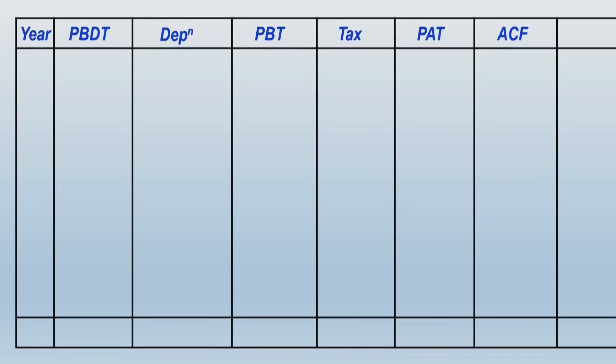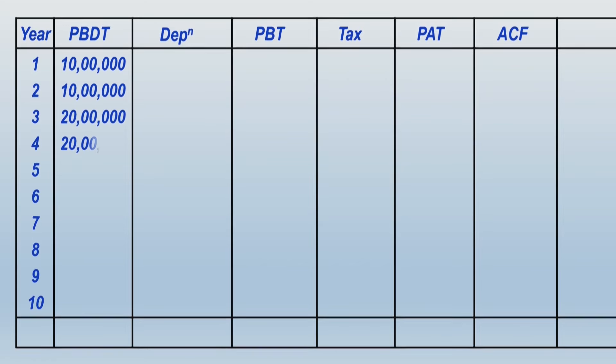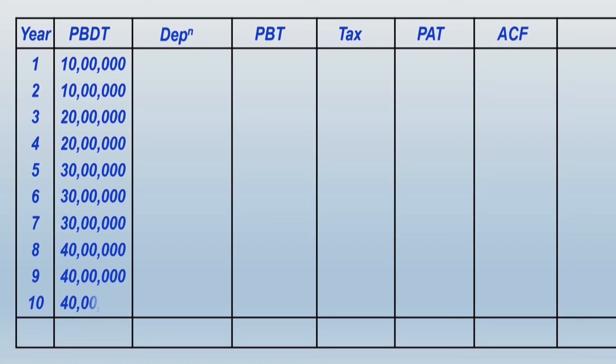Please carefully understand this entire table. I have just indicated part of it — after the ACF column there will be two more columns: one for writing the PV factors and another for the present value of annual cash flows. I'll display that part a little later. For 10 years, the profit before depreciation and tax (PBDT) are given to you.